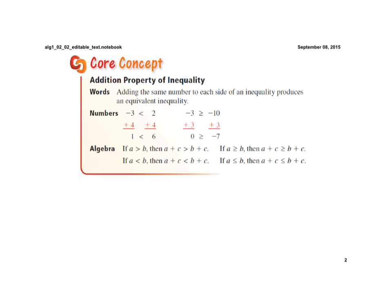Alright, the core concept here is, in words, the addition property of inequality is adding the same number to each side of an inequality produces an equivalent inequality. So, for example, if negative 3 is less than 2, and we add 4 to each side, well, negative 3 plus 4 is 1, 2 plus 4 is 6, so 1 is less than 6, it's still a true inequality.